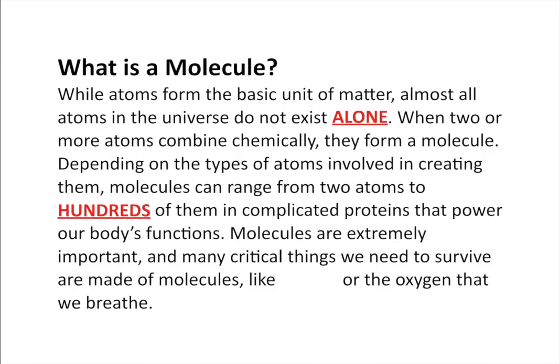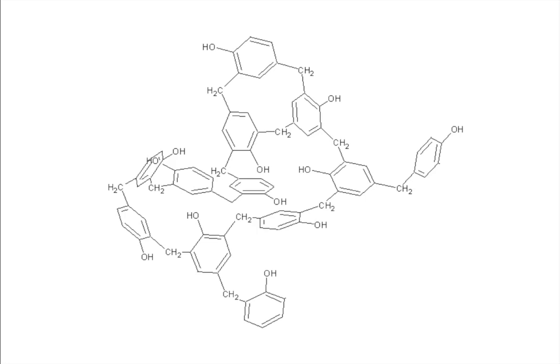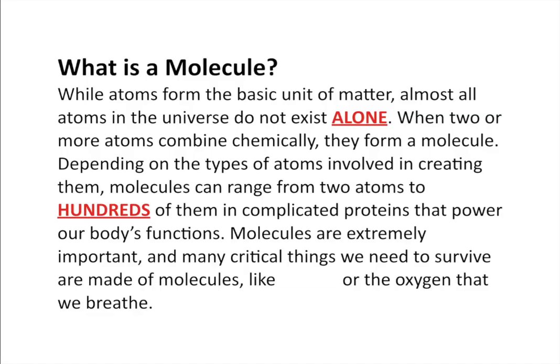Molecules are extremely important. Here's water — three atoms: two hydrogen atoms and one oxygen atom bonded together chemically. And then this complicated molecule — all those hexagons are carbon atoms and stuff bonding together — this is actually bakelite, the earliest form of plastic. This is a single molecule shown in a repeating structure. Molecules are critical to survival: water, as you just saw, is two hydrogen atoms and one oxygen atom bonded chemically, or the oxygen we breathe — two oxygen atoms bonded together because atoms like being stable.